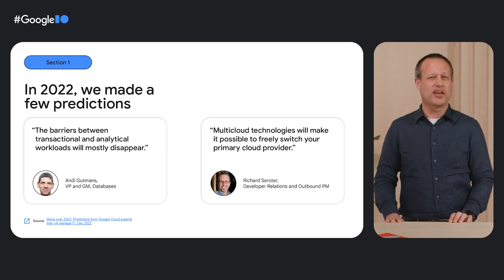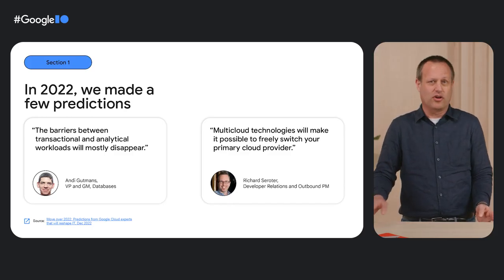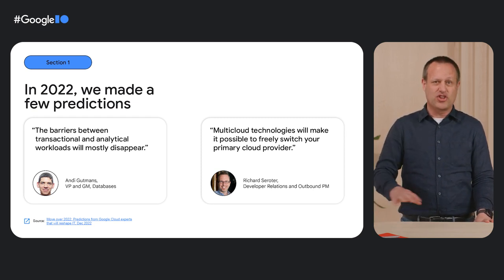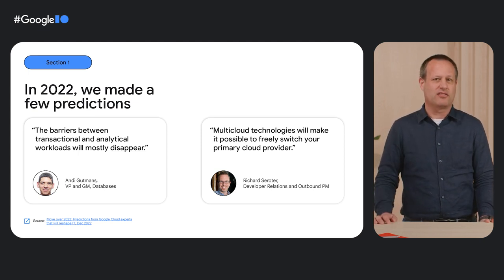Making decisions based on your application data. The one on the left was from Andy Gutmans, the VP and GM for database products at Google Cloud. He predicted that the barriers between transactional and analytical workloads will mostly disappear. The one on the right was from Richard Cerroder of our Developer Relations and Outbound PM team. He predicted that multi-cloud technologies will make it possible to freely switch your primary cloud provider. So if you're not able or not willing to put everything on one cloud, you'll have the means to move it anywhere you want. Obviously, this also applies to your data — it can be generated by multiple apps on multiple clouds or outside the cloud, and you should be able to analyze it wherever you want.